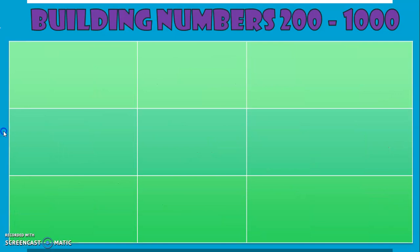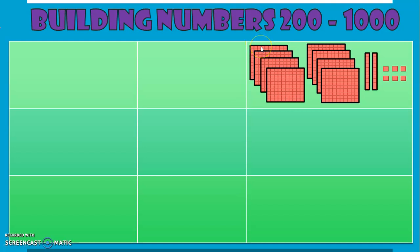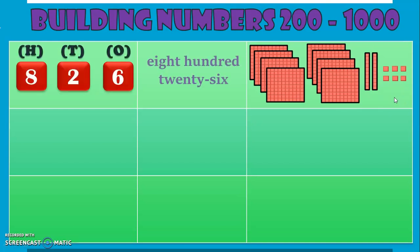Let us move on to another number. How many blocks do we have here? 1, 2, 3, 4, 5, 6, 7, 8 — so 8 hundreds. How many 10s? 1 and 2 — 2 tens. And how many 1s? 1, 2, 3, 4, 5, 6 — 6 ones. So we have 8 hundreds, 2 tens, and 6 ones, making the number 826. Do you notice the hyphen in between? An explanation for why we put the hyphen in between number names is provided in the Phase 1 video of Class 2.